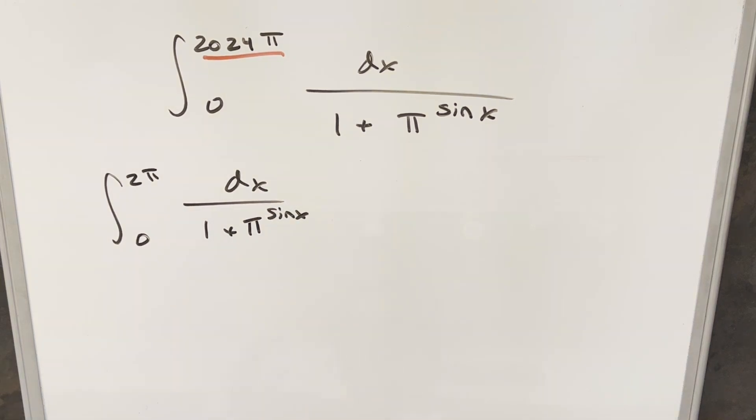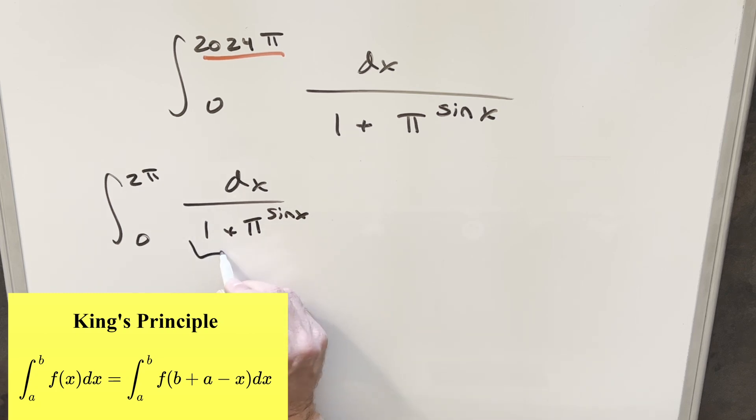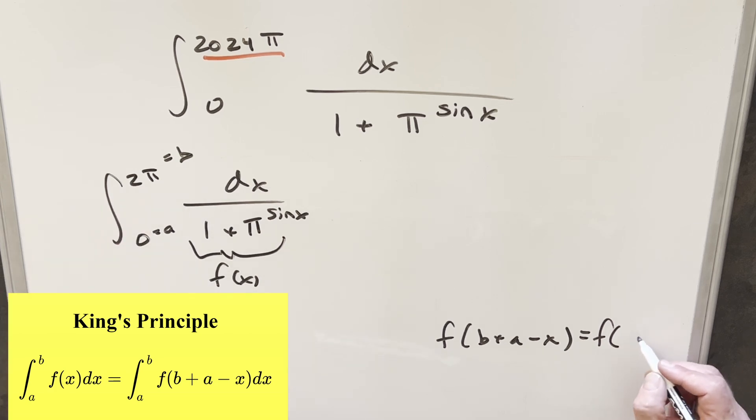And so for this one, what I want to do is let's use King's principle on this and we're going to want, I'm going to think about all this right here as our f of x value. And what we're going to want is our f of b plus a minus x value for King's principle, where the lower bound is going to be a, the upper bound is going to be b. So plugging everything in here, this is just going to transform into f and the bounds is going to be f of 2π minus x.